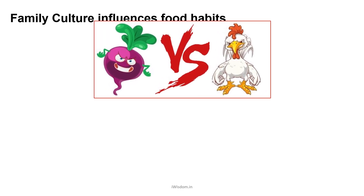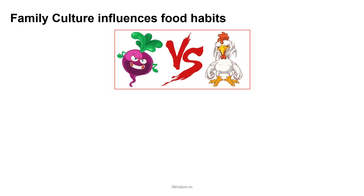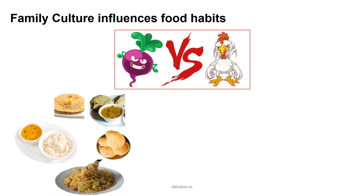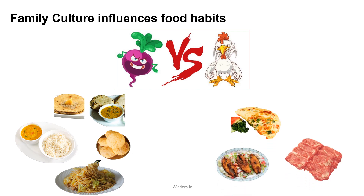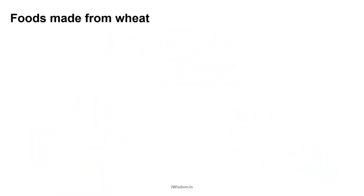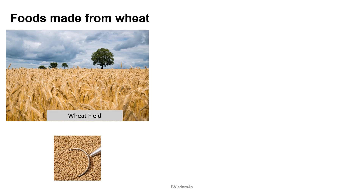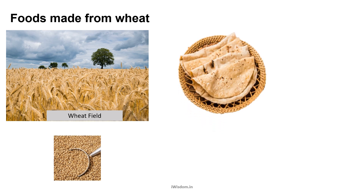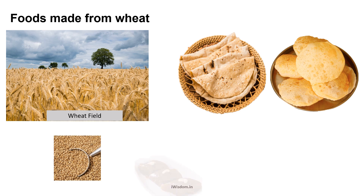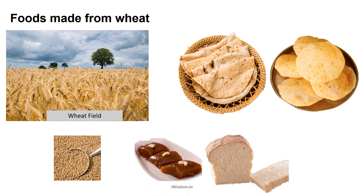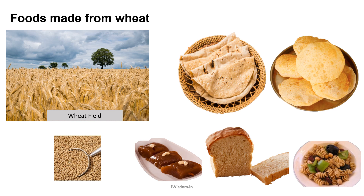The food we eat depends on family culture as well. Some families are vegetarian in nature and they cook dal and chapati. Others are non-vegetarian and cook egg, fish, and meat. Also, depending on the family culture, the same food is prepared differently. See how the same wheat is used in different preparations like roti, puri, halwa, bread, and pasta, depending on family tradition.